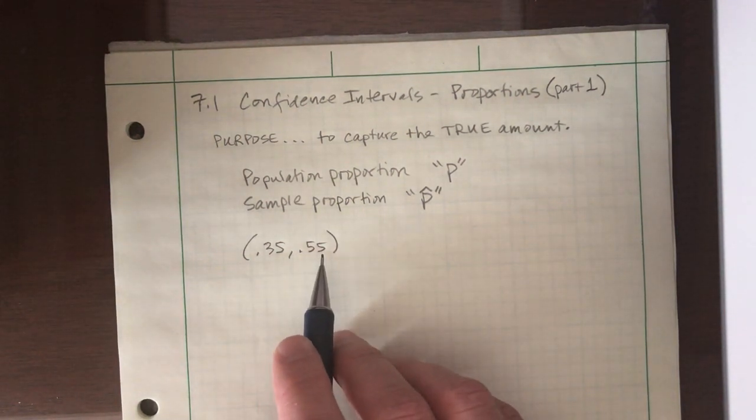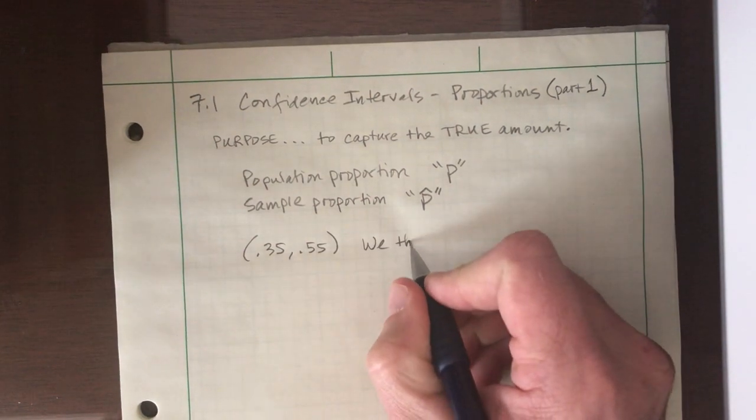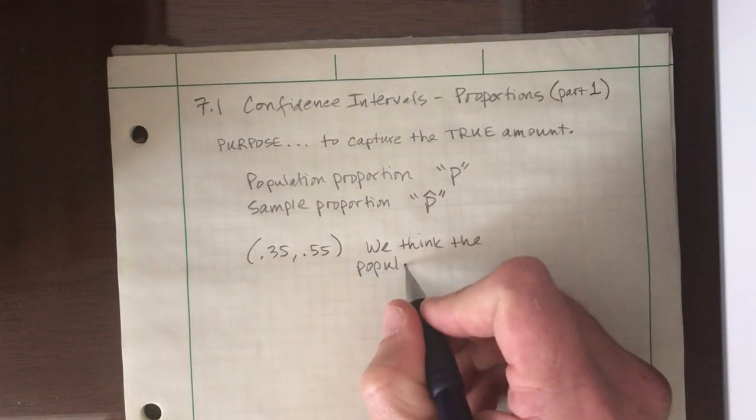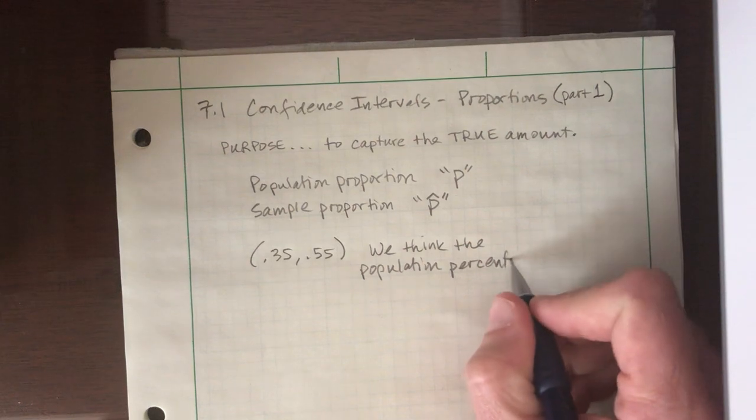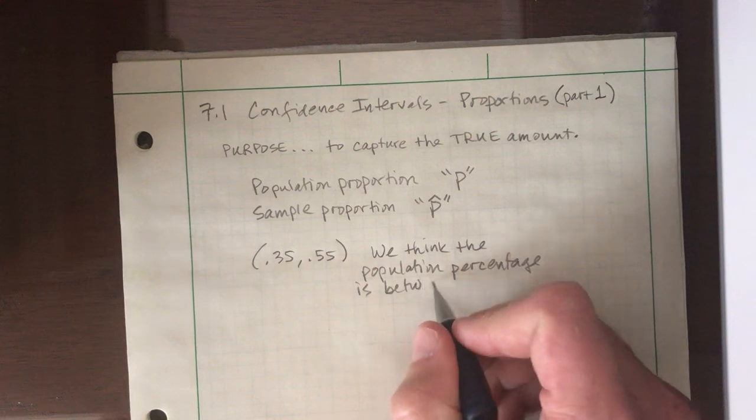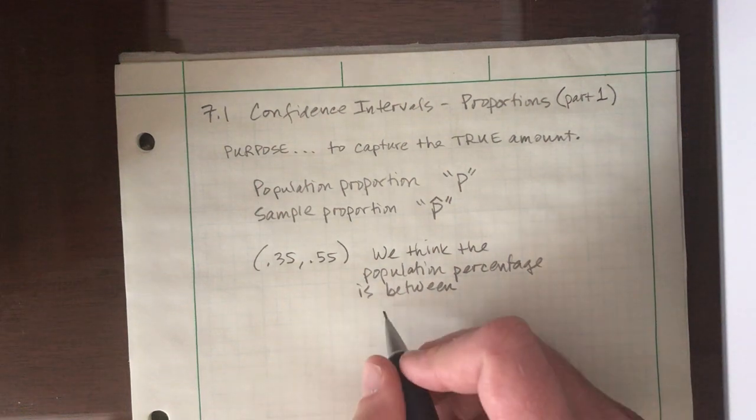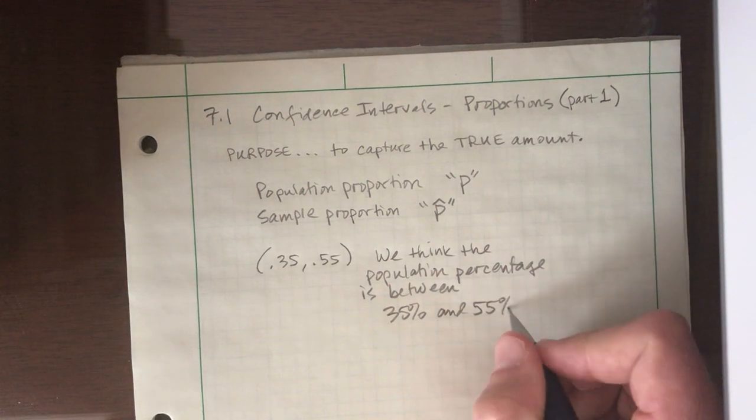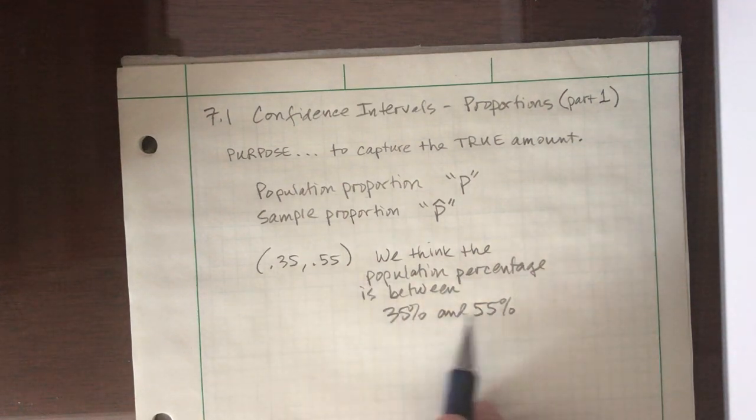And so what is this telling me? If we were handed this confidence interval, what we're saying is that we think the population proportion, or sometimes I like to throw in the word percentage when writing a sentence, it sounds better. We think the population percentage is between 35% and 55%.